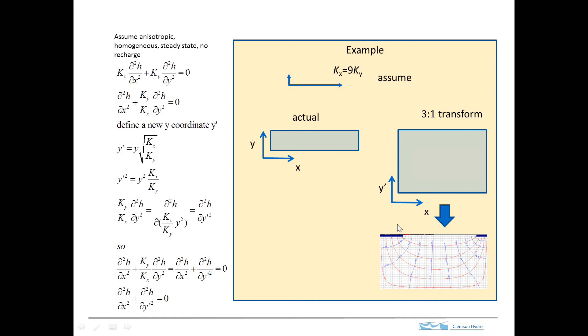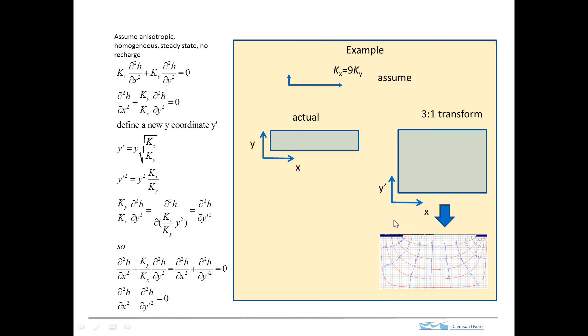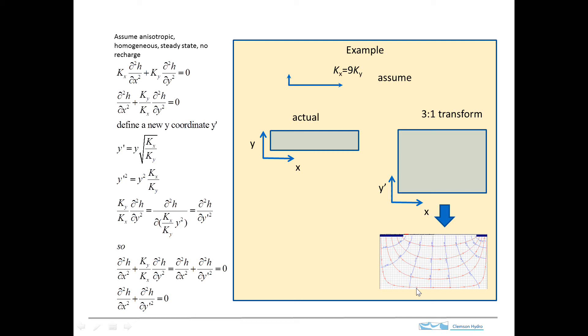But this is the problem solved in this prime coordinate system, in this transformed coordinate system. So to get it into this system, we need to transform it back. And the way that that's done is to just reduce the y, basically the length of the y coordinate by a factor of 3. And we just compress it so we end up with this.